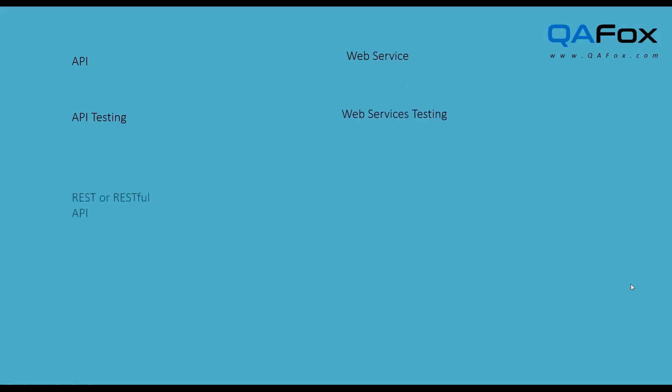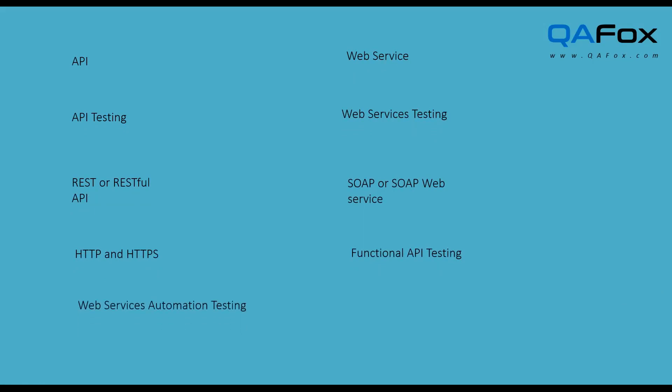So we have been listening to a few words related to API and web services. Here are a few terms: web services, HTTP and HTTPS, functional API testing, web services automation testing, and tools used for automation. These are the few contents related to the API that we have been listening to.